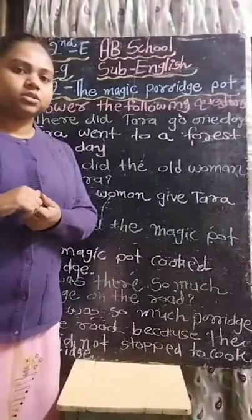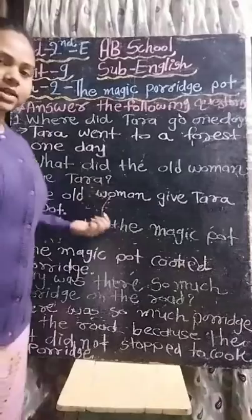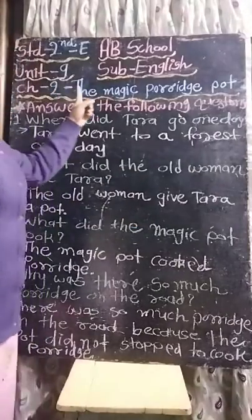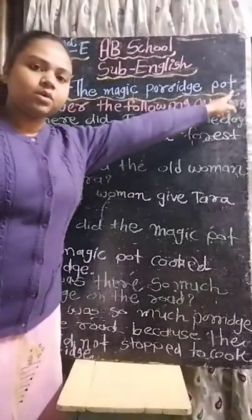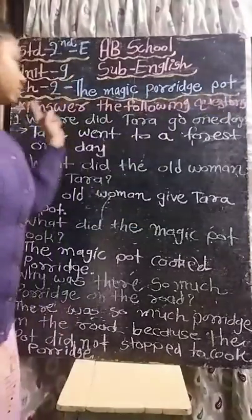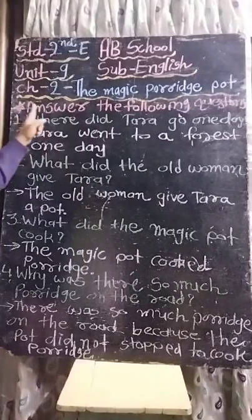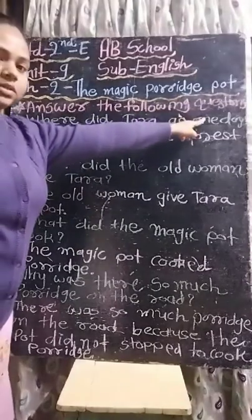Hello students, today we are going to do question answers of Chapter 2, The Magic Porridge Pot. Let's start — answer the following questions.